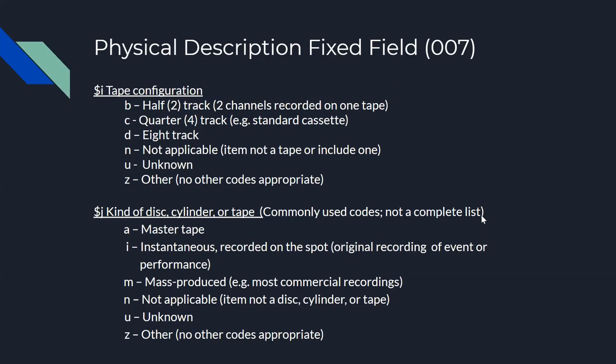Subfield I is the tracks on a tape, and this usually pertains to a cassette. Options are half track (two channels), quarter track (four channels), eight track, and then not-applicable, unknown, and other. Subfield J codes the kind of disc or cylinder. Commonly used codes are master tape, instantaneous — meaning an original recording made on your own device not professionally done — mass produced for commercial recordings, and not-applicable, unknown, and other.